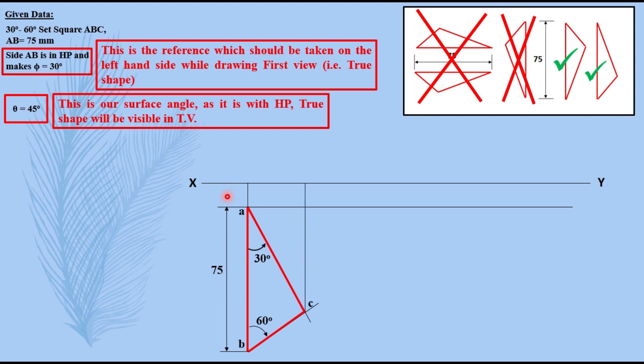Then proceeding to another view, that is our front view. Using the projectors we can name them A dash, B dash will be on the same projector, C will be on this side.